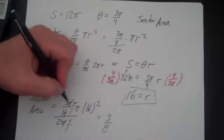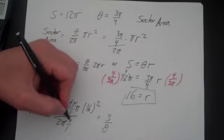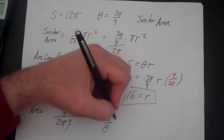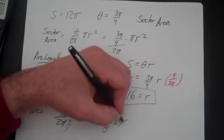So there I get 3 over 8, right? The pi cancels with the pi. I multiply by 4 over 1, that becomes 8 and that becomes 3. So it's 3 eighths of 256 pi.